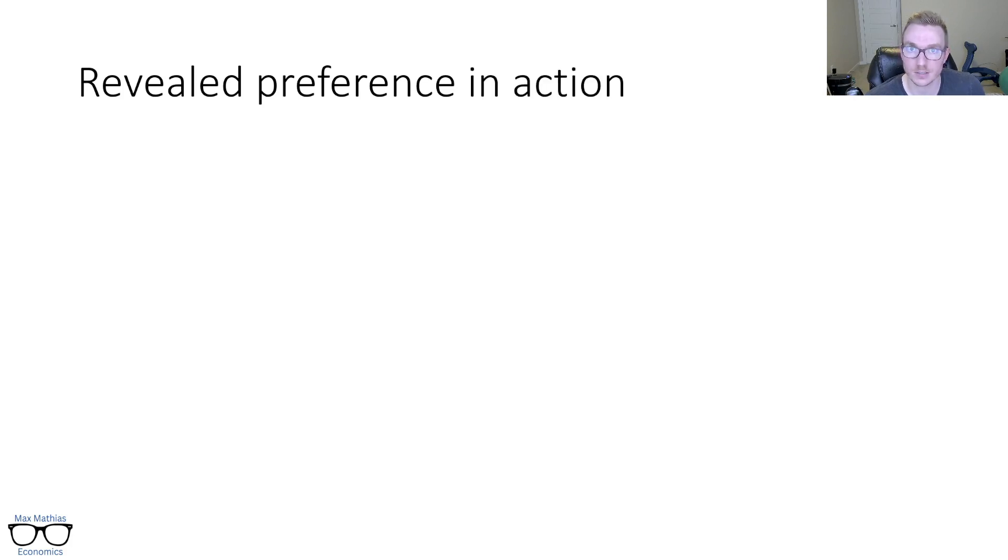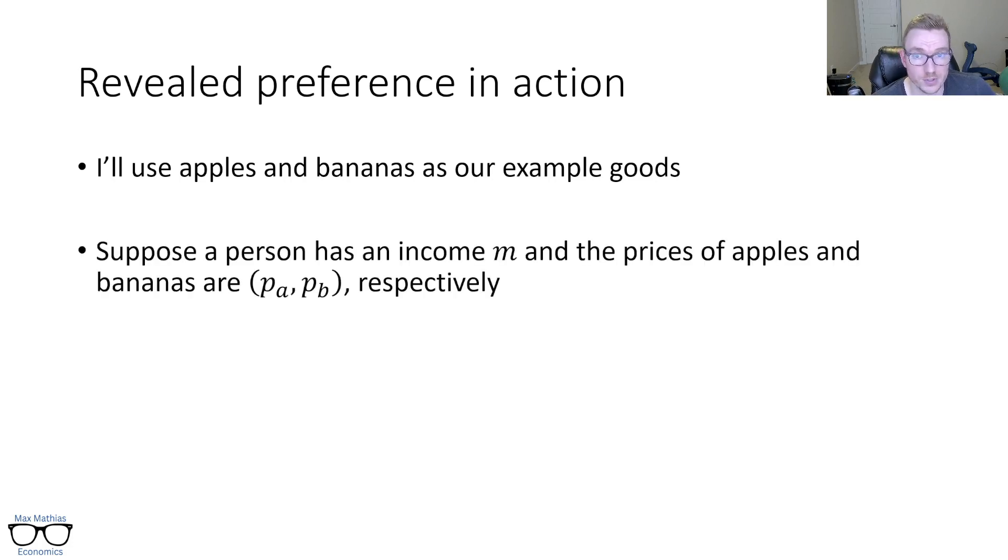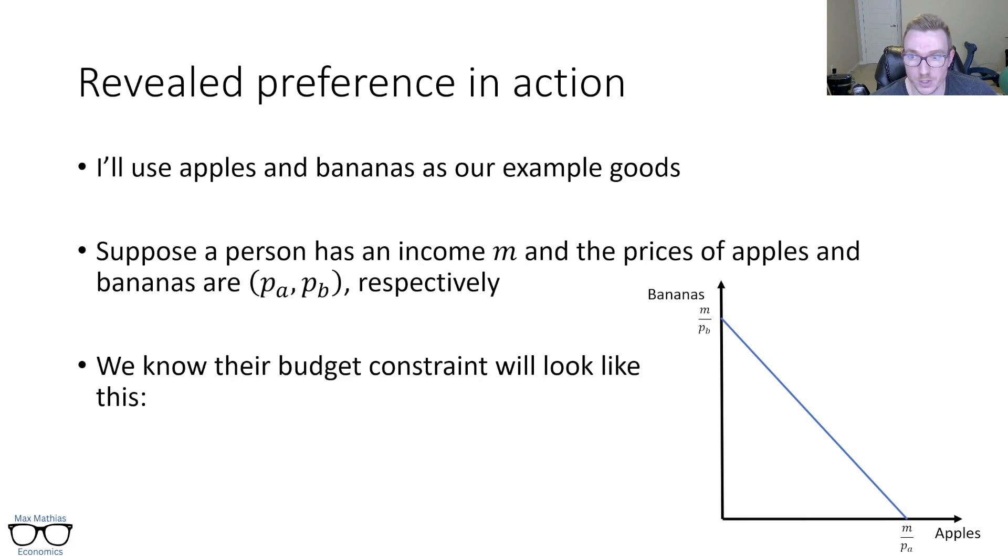So let's talk about revealed preference in action. I'll use apples and bananas as an example of goods. This should be very familiar to you if you watched the preferences and budget constraint video. We're going to say a person has an income M and the prices of apples and bananas are PA, PB, respectively. Again, these are all just numbers. And we know from the budget constraint video that their budget constraint will look like this. If you watch that video, this will look super familiar.